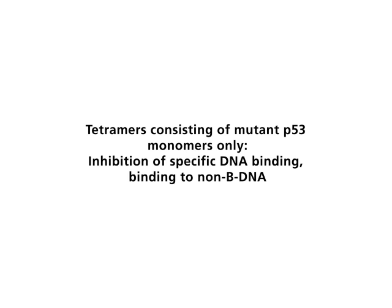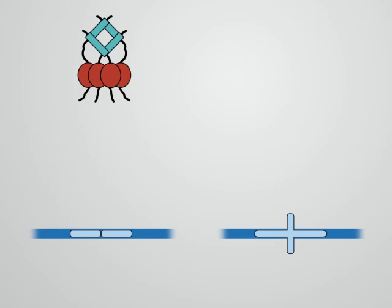Tetramers consisting of mutant P53 monomers only. Inhibition of specific DNA binding. Binding to non-B DNA. In cases where one TP53 allele is mutated and the second allele is wild-type, some of the resultant tetramers consist of mutant P53 monomers only.